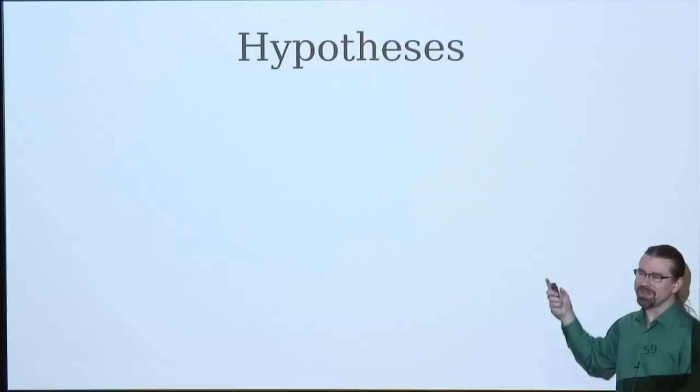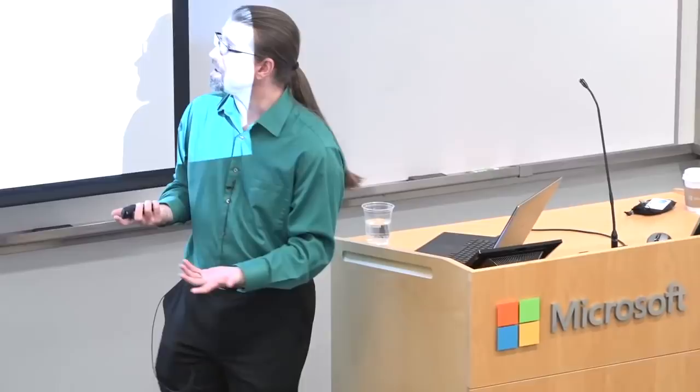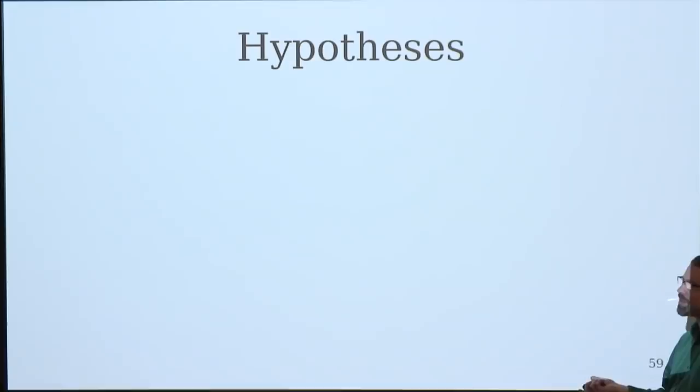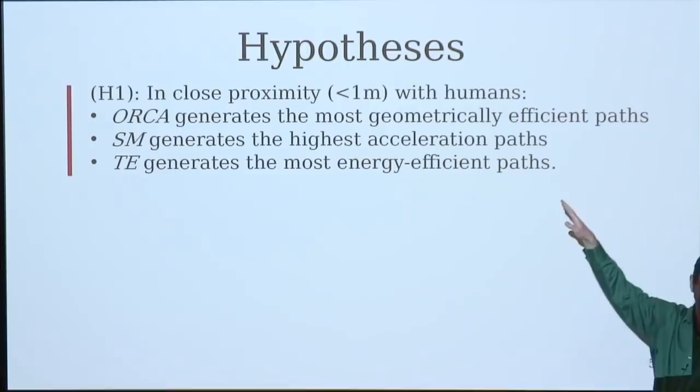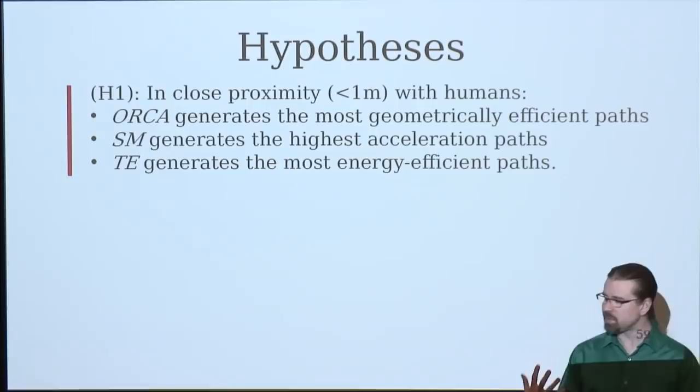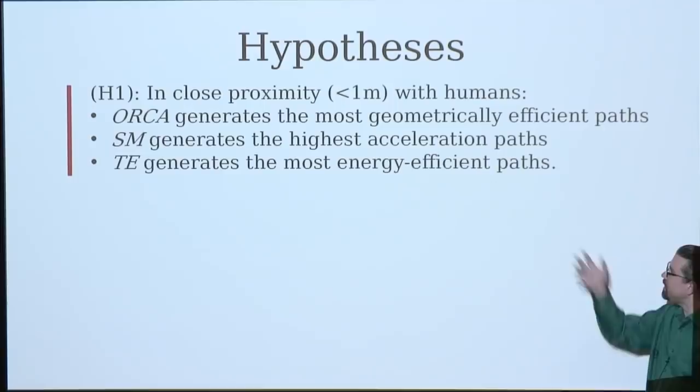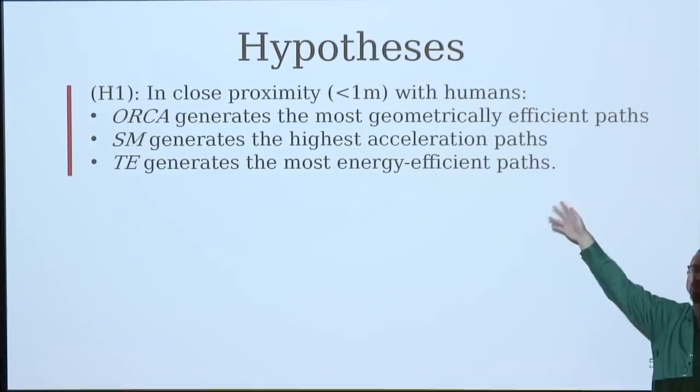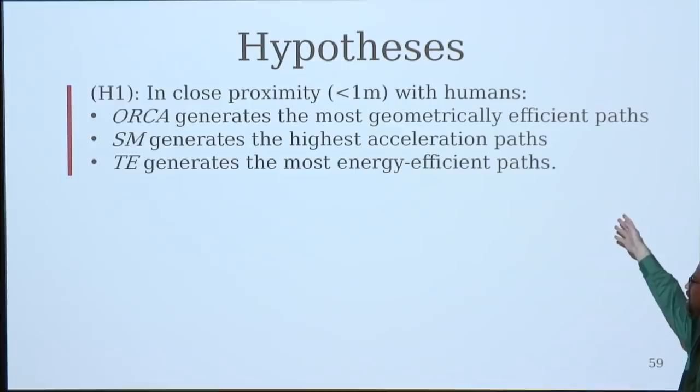And we generated a list of hypotheses. Hypothesis generation for this sort of thing is actually quite hard because it's hard to say what good is even. And you'll see that we actually struggle with this. So, in close proximity, we want to say that ORCA generates the most geometrically efficient paths because it tries to deviate minimally. Social momentum generates the highest acceleration paths because it's trying to go in a circle, right? So, we should see higher acceleration. And then telepresence generates the most energy efficient paths because humans by nature tend to minimize jerk in their motions. So, are these the right metrics for measuring robot behavior? Probably not actually, but we don't have the right metrics. That's really the problem here.